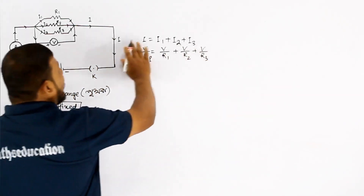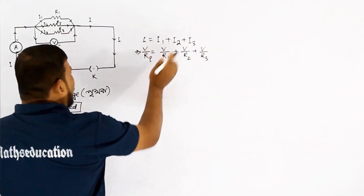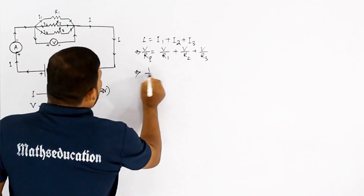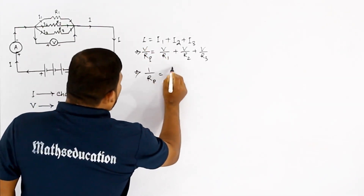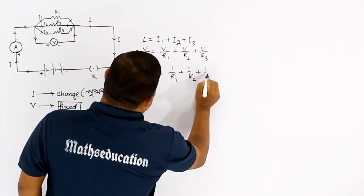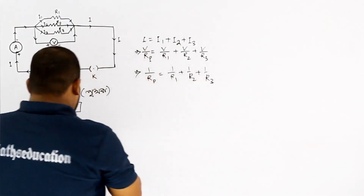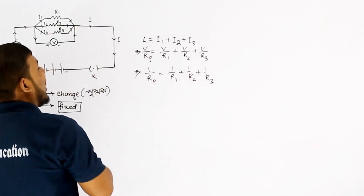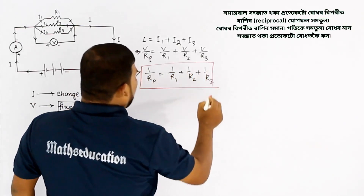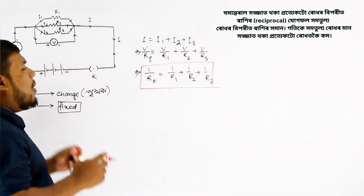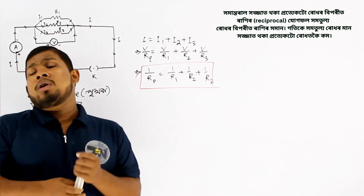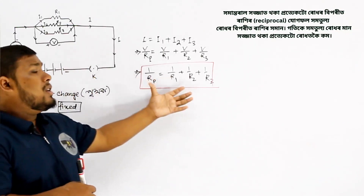You can take the question from this: 1 divided by rp equal to 1 by r1 plus 1 by r2 plus 1 by rt. In this case, we will not be clear that there is a number of other people in which you have to do as a resource.